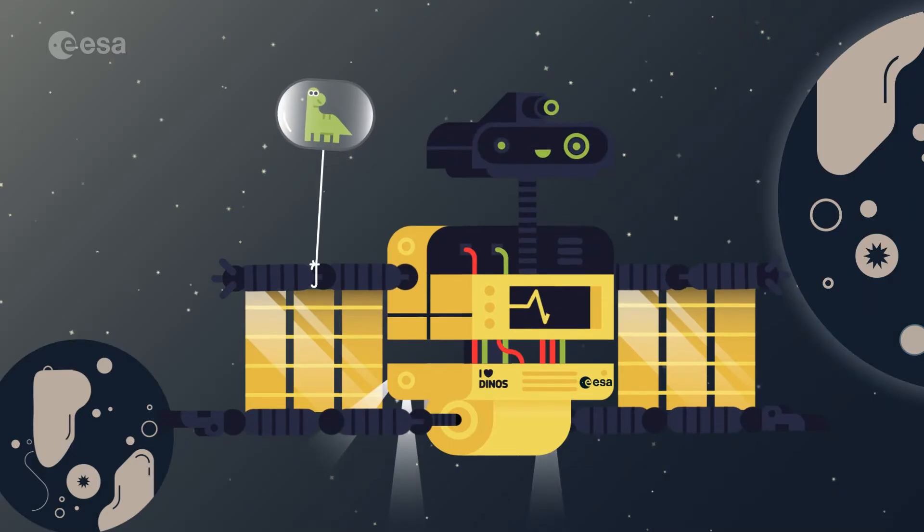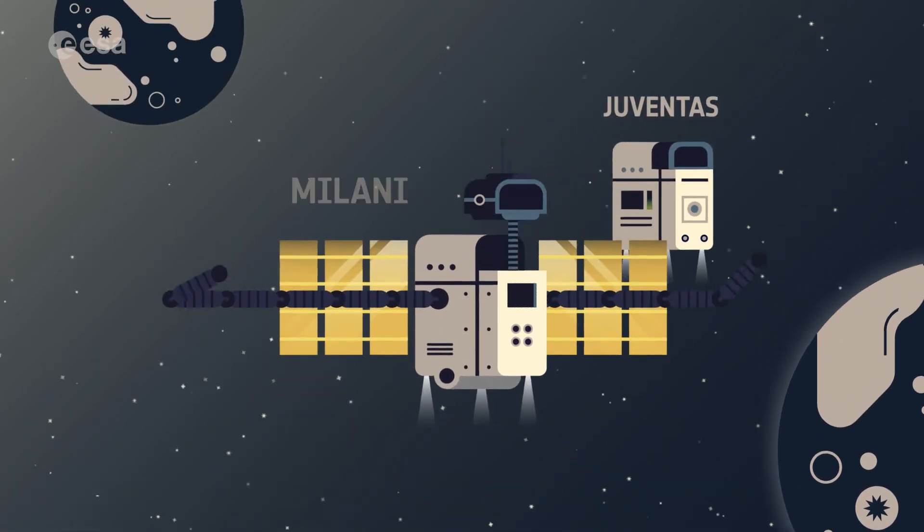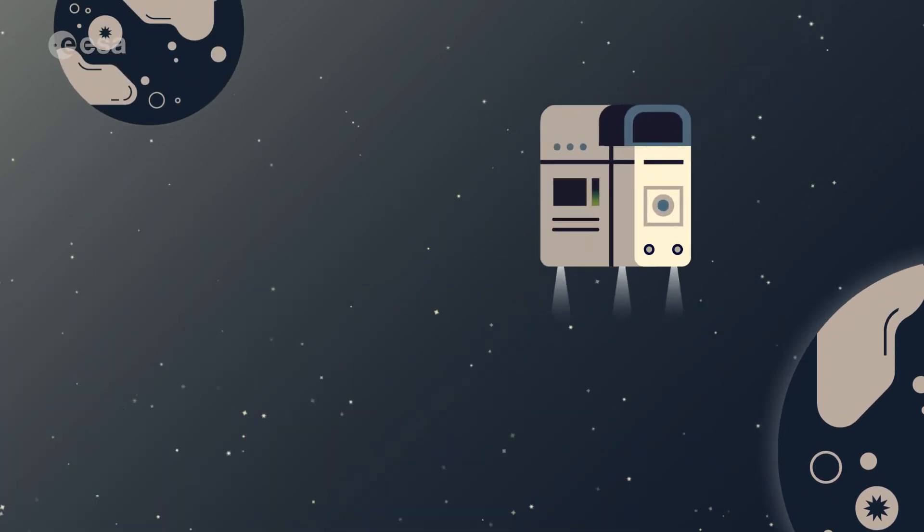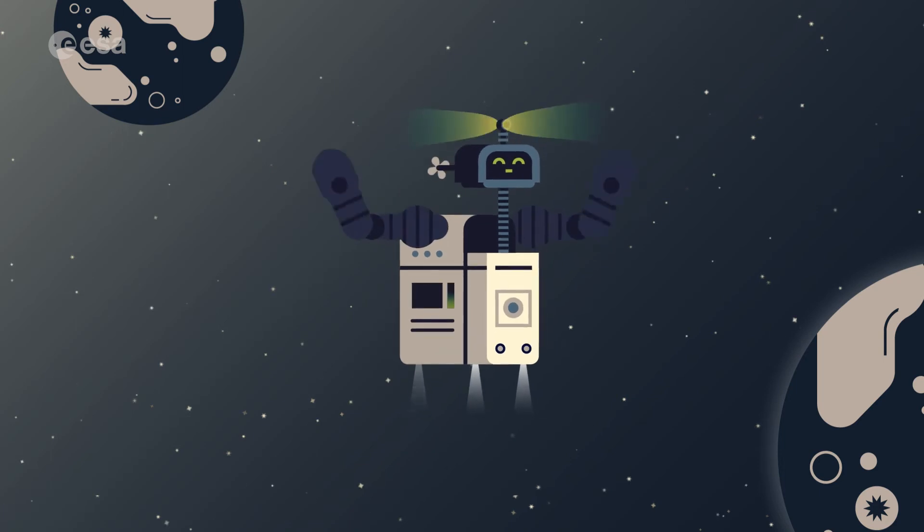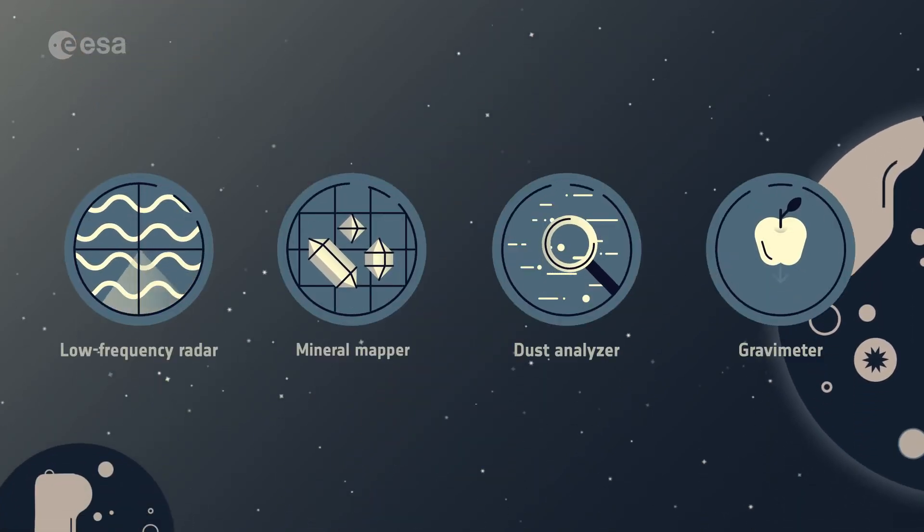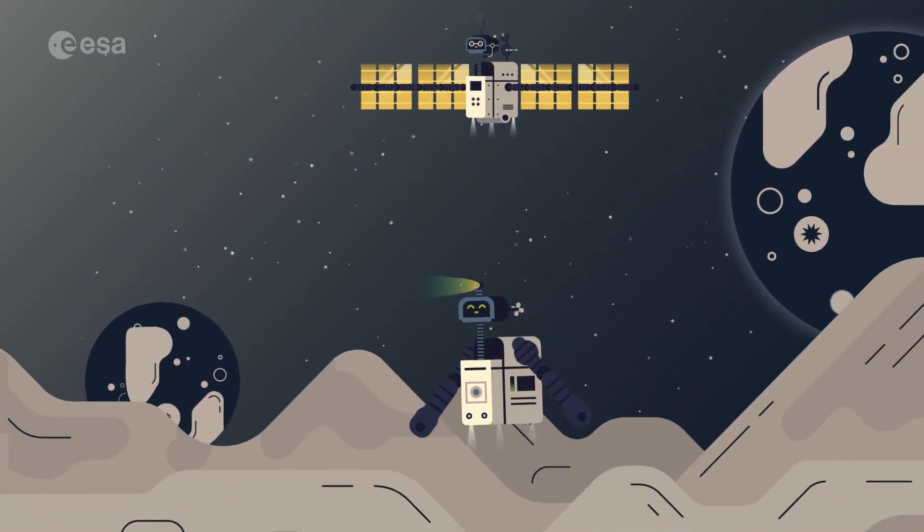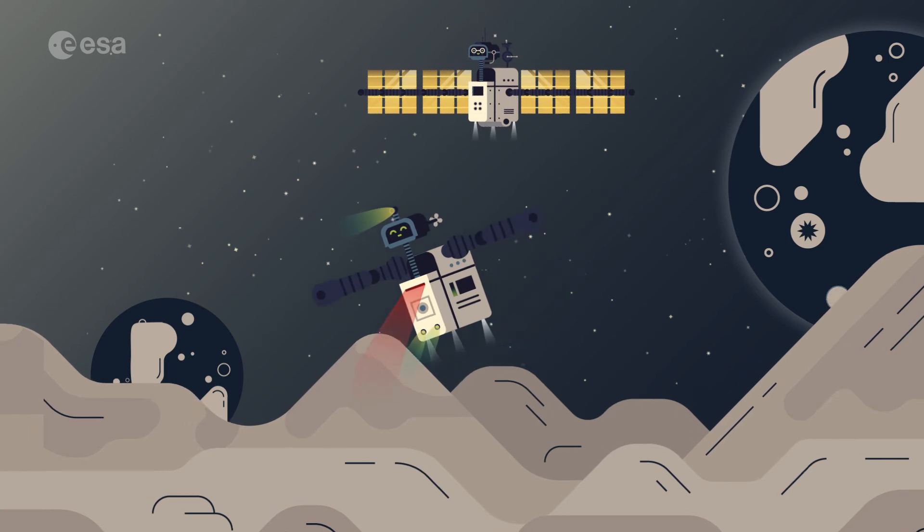Meanwhile, HERA will deploy two briefcase-sized CubeSats, called Juventus and Milani. Packed with high-tech equipment such as a low-frequency radar, a mineral mapper, dust analyzer, and a gravimeter, these mini-satellites will get an even closer look before attempting to land.